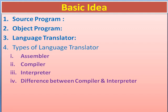So now let us understand what is language translator. Language translator is a system program which is used to translate from source program to object program — that is, from the program code written by programmers into the language in which the computer performs execution. There are three types of language translator: assembler, compiler, and interpreter.